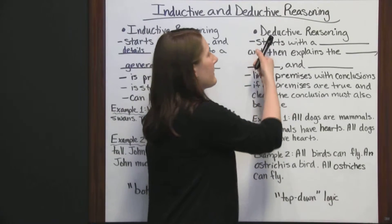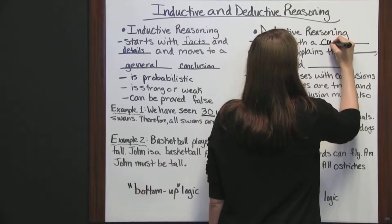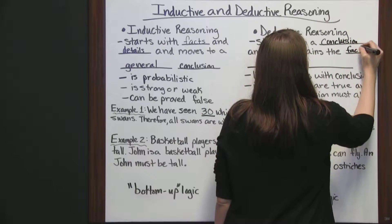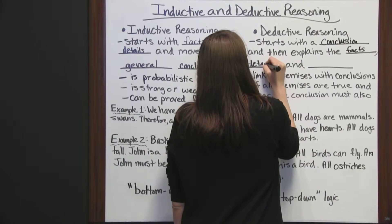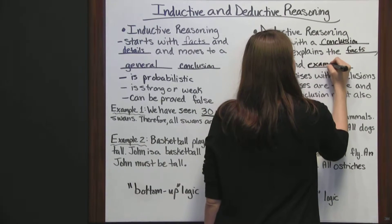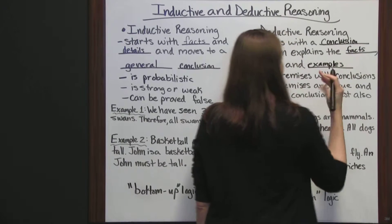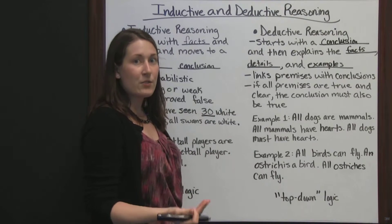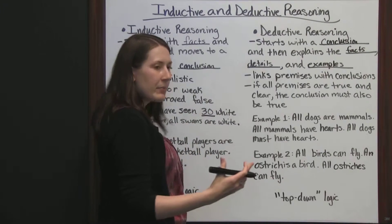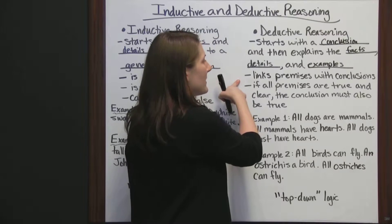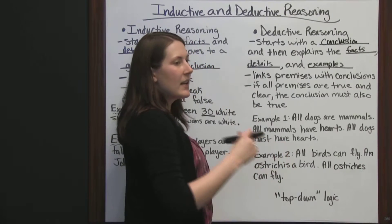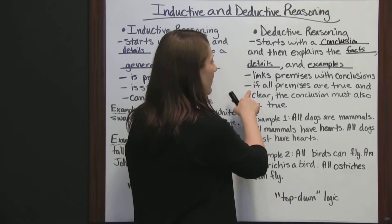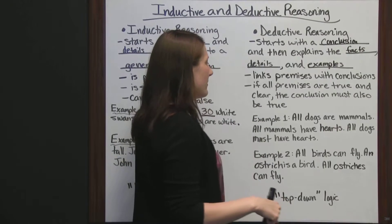Next, let's talk about deductive reasoning. Deductive reasoning starts with a conclusion and then explains the facts, details, and examples that support it. You start with one basic conclusion or statement, and then give facts and details that support it or are examples of that statement. This one links premises with conclusions — you come up with a certain premise and it's linked to your conclusion that you started with. If all premises are true and clear, then the conclusion must also be true.